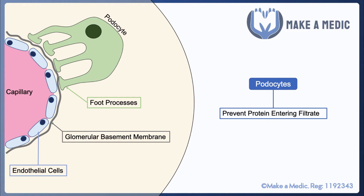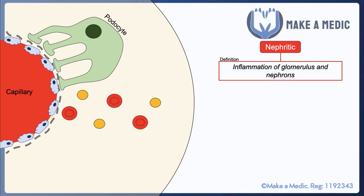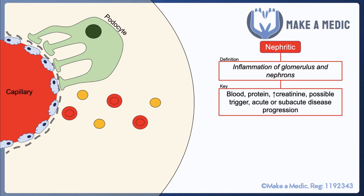Nephritic syndrome first and foremost is associated with inflammation of the glomerulus and nephrons. In conditions that cause nephritic syndrome, you tend to see a lot of blood and protein within the urine. Some of the other features of nephritic syndrome include a reduction in the ability of the kidneys to filter the blood, hence you get a rise in serum creatinine. It may also be associated with some sort of trigger such as an infection, and it can have an acute or sub-acute disease progression.